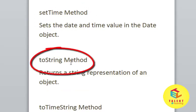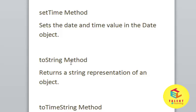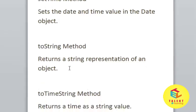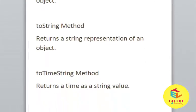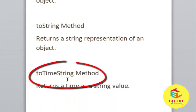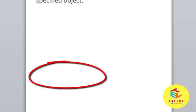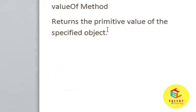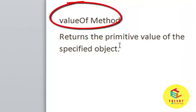toString method returns a string representation of an object. toTimeString method returns a time as a string value. valueOf method returns the primitive value of the specified object.